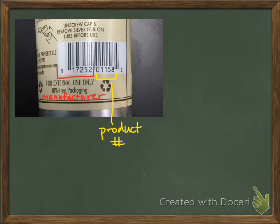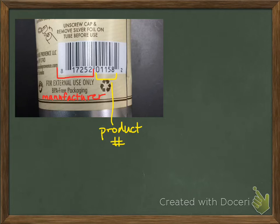This barcode is from a lotion bottle — La Maison de Provence coconut cream moisturizing shea butter and argan oil hand and body lotion. So 0-1-1-5-8 would be this particular body lotion, and 8-1-7-2-5-2 is La Maison de Provence, the company name. Then you notice there's that little number left all by itself on the end — that's our check digit.